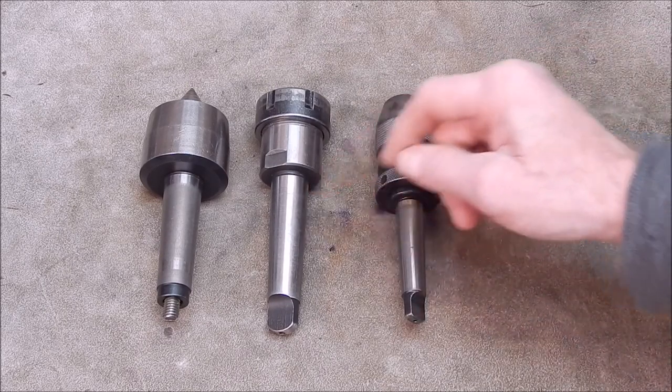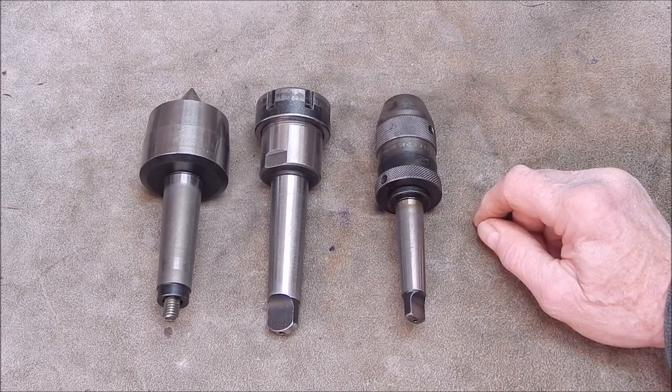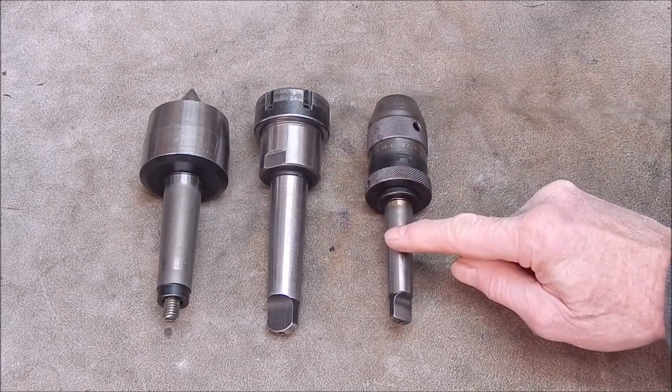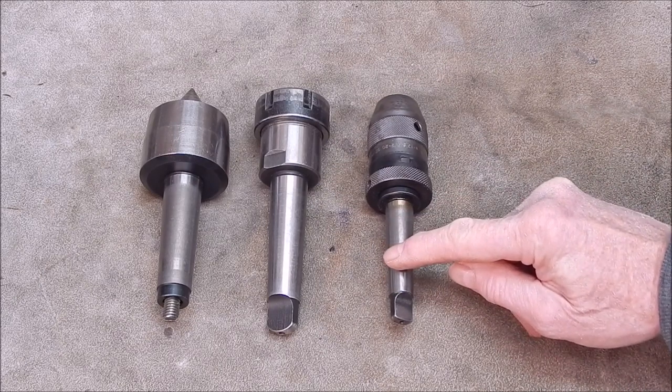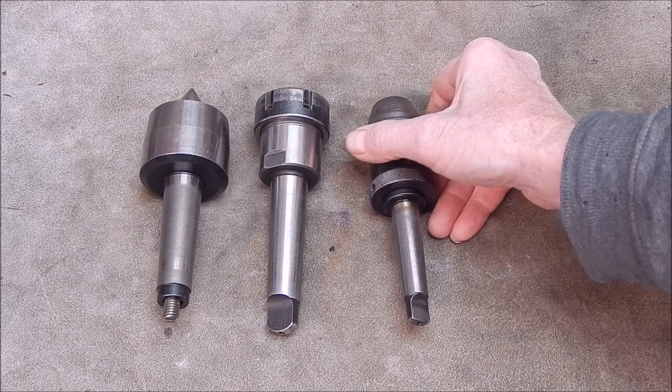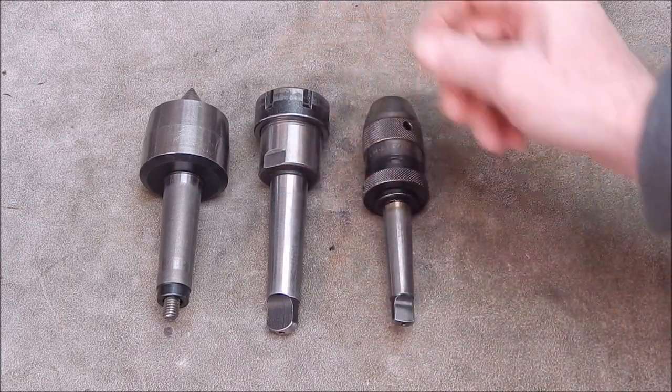Of course if the Morses are a different size we've got problems. This is a Morse 3 and this is a Morse 2. Morse 2 is very common, so how can I use that in a Morse 3 or even a Morse 4?